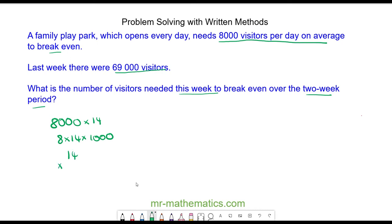14 times 8 I can work out using the column method. 4 times 8 is 32. 8 times 1 is 8, add 3 is 11, and now I'm going to multiply it by 1000.